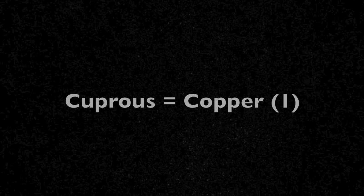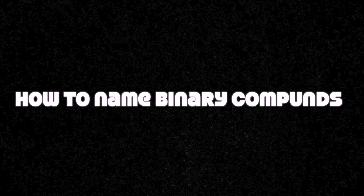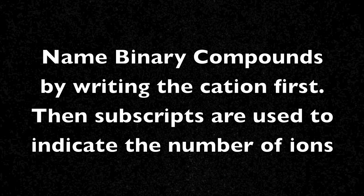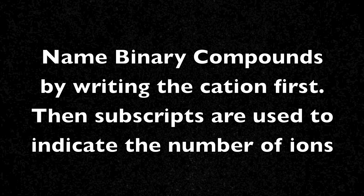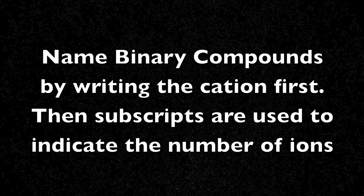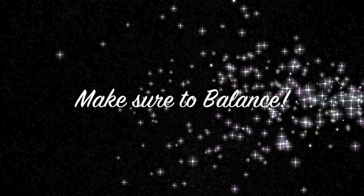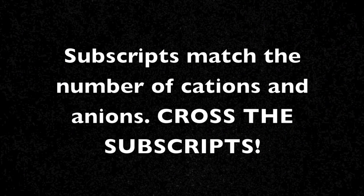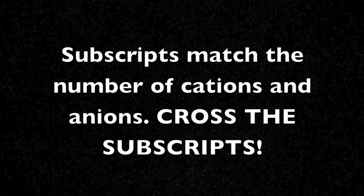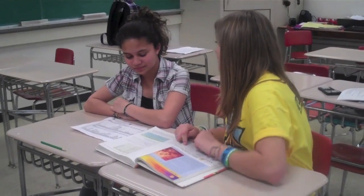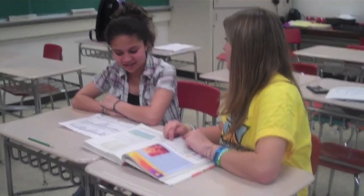So I would be copper two? That's Cooperic. You would be copper one. Cooperus, I doubt you know about binary compounds. I know. You name binary compounds by writing the cation first. Then the subscripts are used to indicate the number of ions. You must have it balanced, though. The subscripts match up the proper number of cations and anions — cross the subscripts, Bella. Can you give me an example? Bella, if we were together, according to the binary compound naming rule, we would make copper's bromide. CuBr without any subscripts?